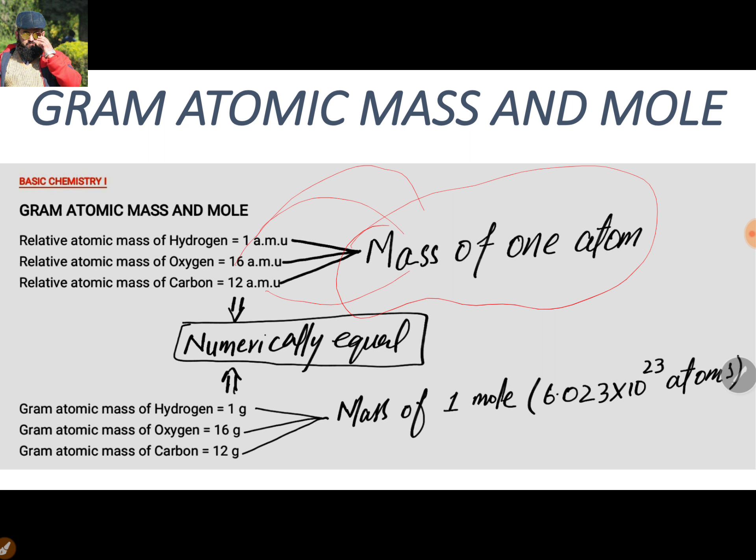Now, the gram atomic mass, or one gram atom of an element, and its relative atomic mass are numerically equal. Here you can see: for hydrogen, the value is 1 — 1 AMU and 1 gram — the difference is only in the unit. So when the masses are increased in the same ratio, the ratio remains the same.